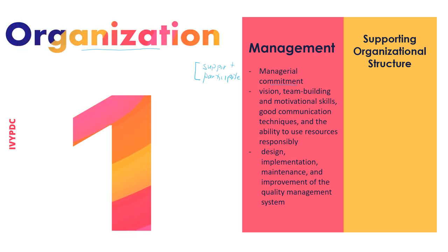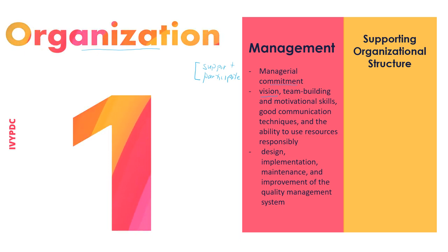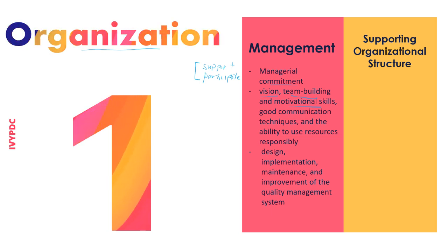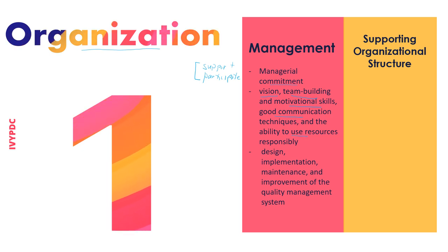One of these qualities is vision — that means they should have a clear goal. They know where they're going, and they can relay this to all the members so that all of them can work towards that same goal. They should also have good team building and motivational skills, and it's important that they are able to communicate properly with their members. A good characteristic of a leader is that they should be able to use the available resources properly.